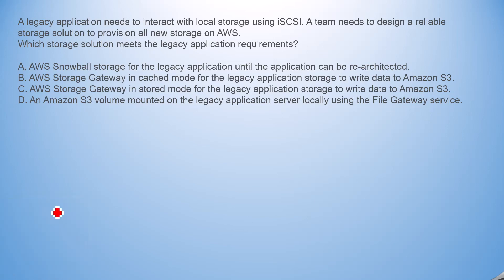We will underline the hints. First, data is lying on local storage, and we need a reliable storage solution. This means data will reside in AWS but should also be available in local storage. iSCSI stands for Internet Small Computer System Interface, which is used to interact with storage. The most frequently accessed data needs to be available in local storage.